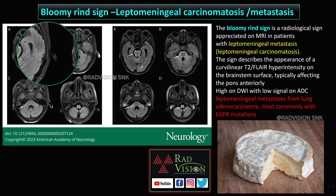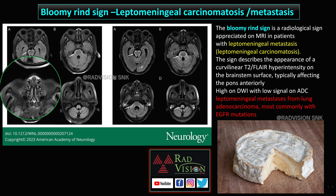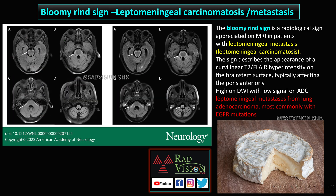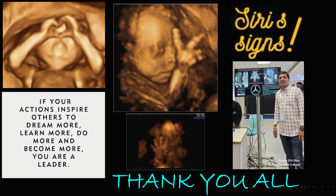Next — guess the sign and diagnosis. Here you can see typical hyperintense areas along the surface of the pons and along the pontocerebellar peduncles; incidentally there is bilateral otomastoiditis. This is classically called the blue merin sign, seen in leptomeningeal metastasis or leptomeningeal carcinomatosis — curvilinear T2 oblique FLAIR hyperintensities on the brainstem surface, typically affecting the pons, which may be high on DWI with low signal on ADC. This is most commonly from leptomeningeal metastasis from lung adenocarcinoma, particularly with EGFR mutations. These are the signs presented at the IRA conference — thank you all.